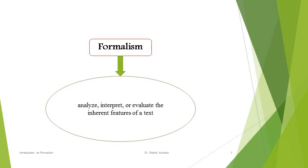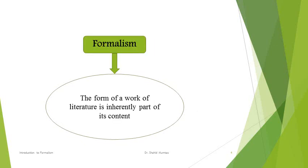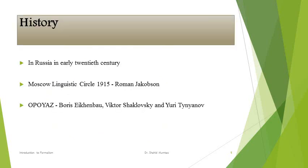Formalism focuses on word formation, coinage, and structure — not on the author and his biography. Formalism refers to critical approaches that analyze, interpret, and evaluate the inherent features of a text. These features include not only grammar and syntax but also literary devices like meter and tropes. The form of a work of literature is inherently part of its content, and the attempt to separate the two is wrong.